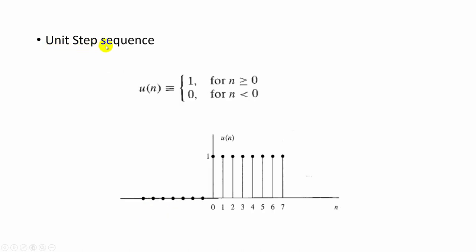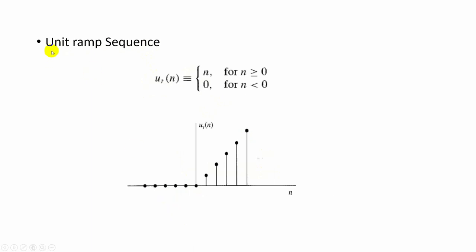Next is the unit step sequence, where u(n) is equal to 1 if n is greater than or equal to 0, and equal to 0 if n is less than 0. Next is the unit ramp sequence, where u(n) is equal to n for n greater than or equal to 0 — meaning when n increases, u(n) also increases — and equal to 0 when n is less than 0.